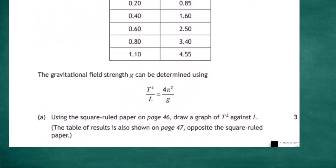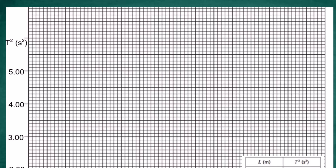The gravitational field strength g can be determined using the formula: T² divided by L equals 4π² divided by g. Using square-ruled graph paper, the task is to draw a graph of T² against L.